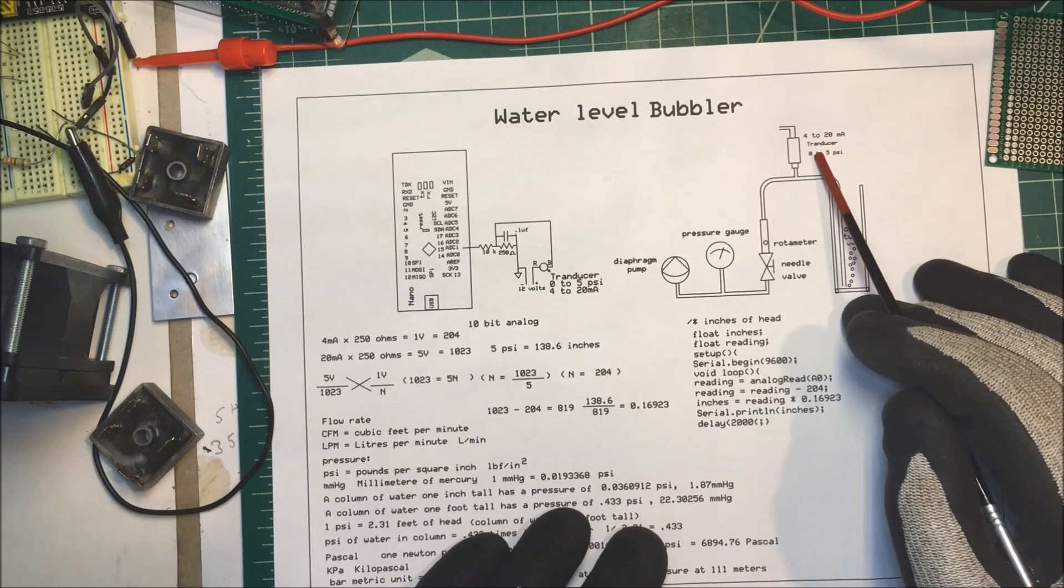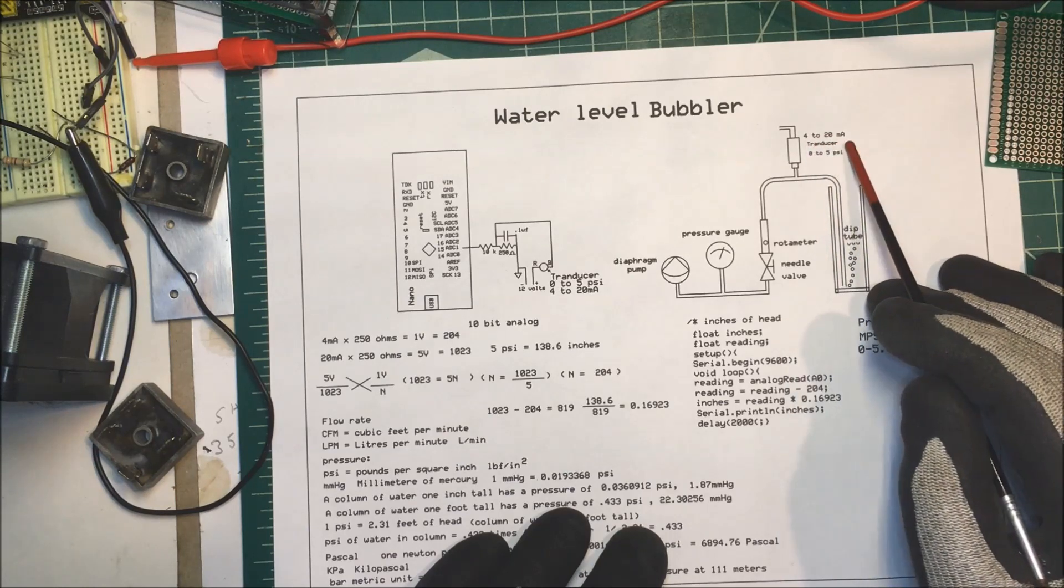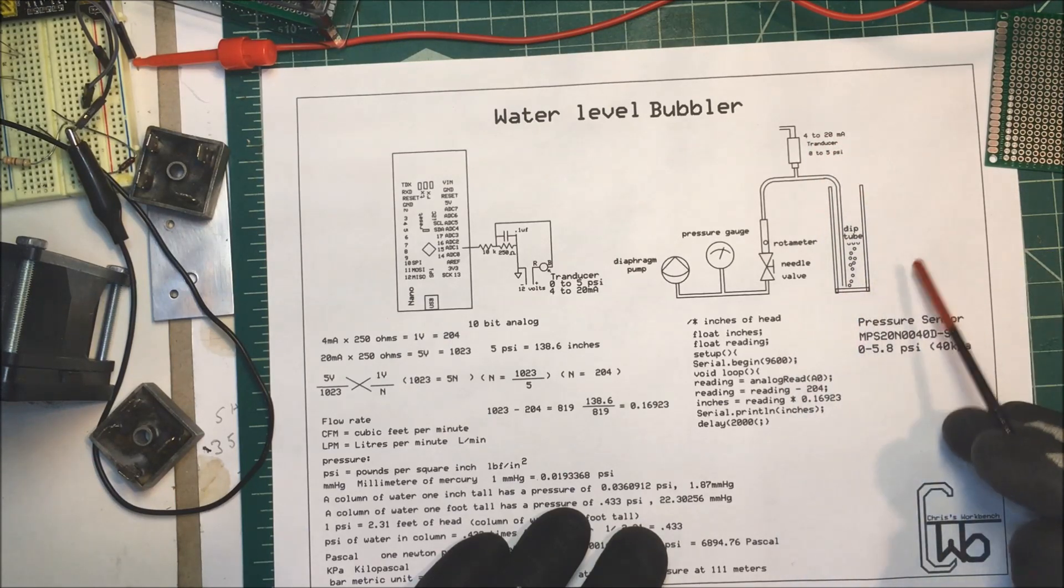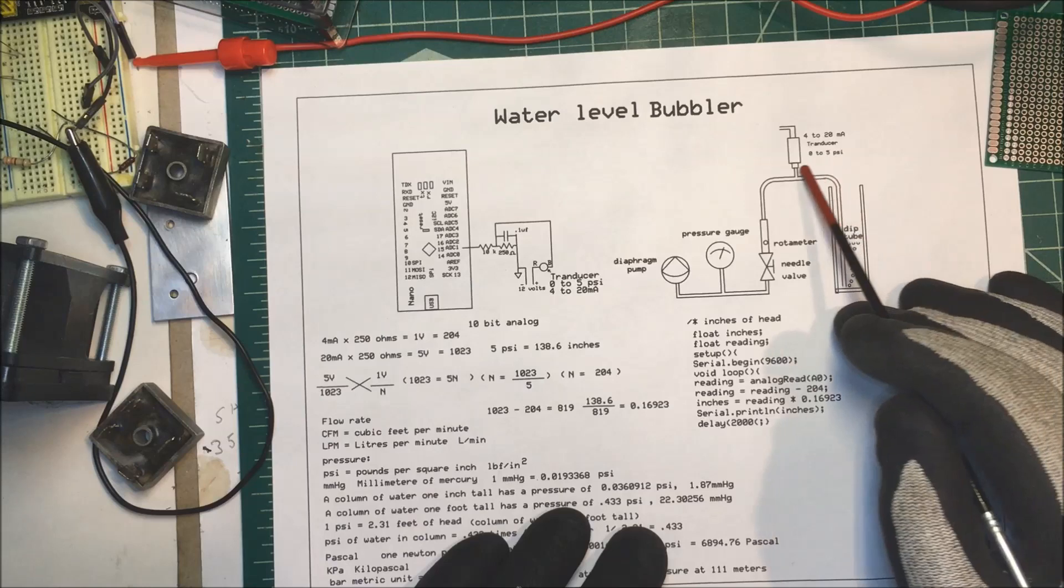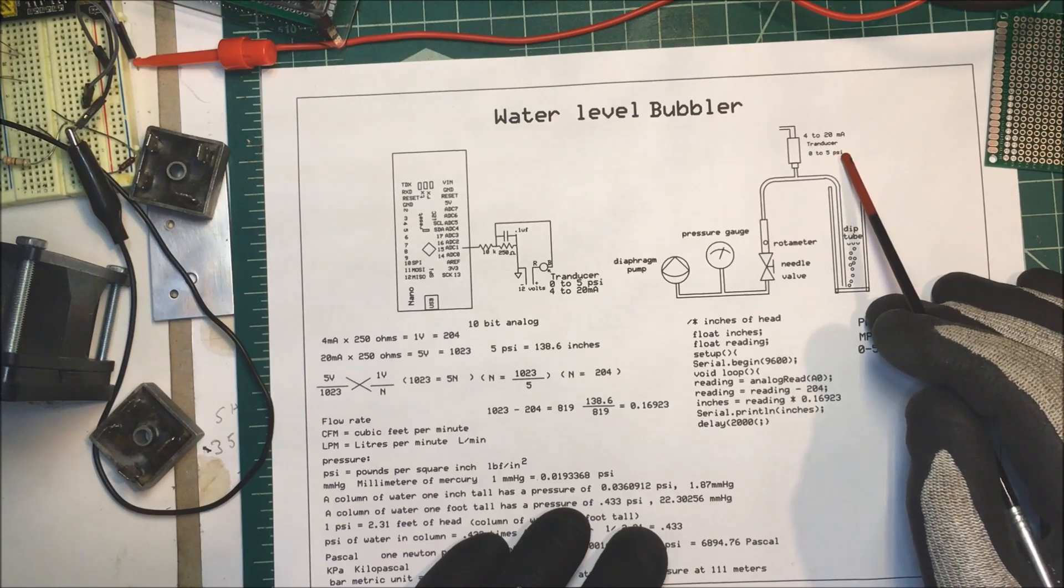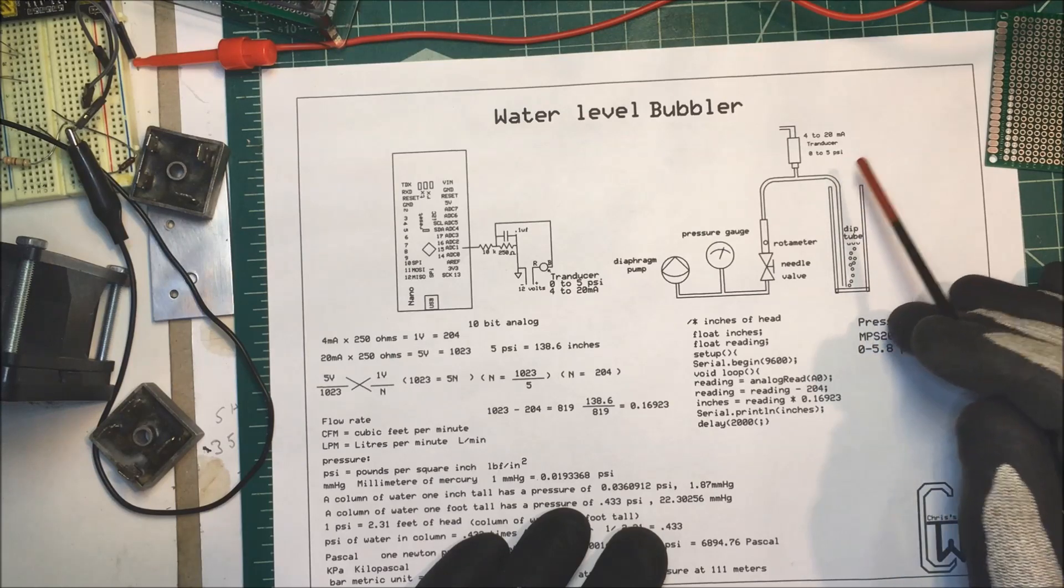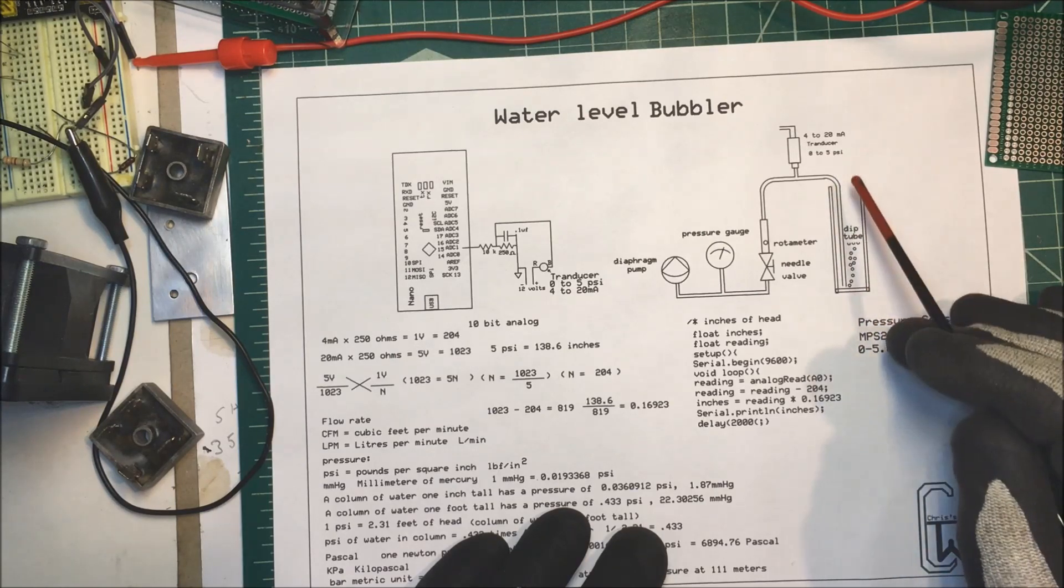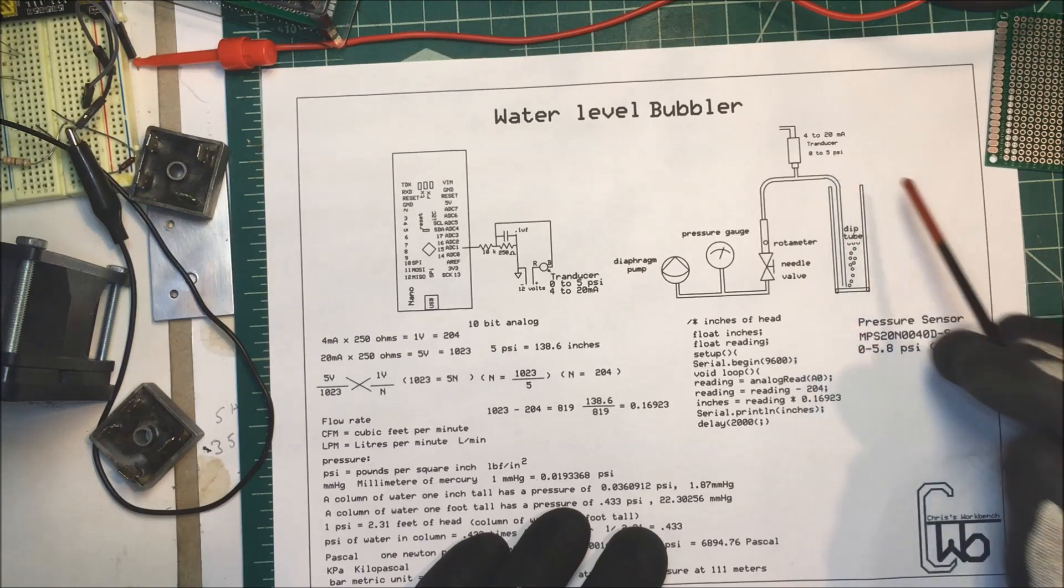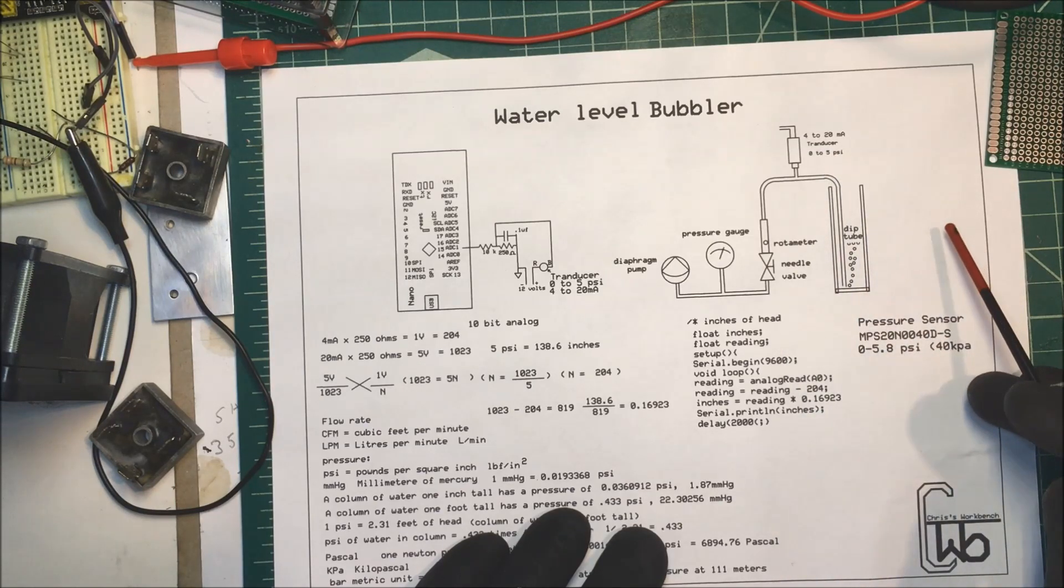And then we have a transducer. In this case, I'm using a 4 to 20 milliamp transducer, 0 to 5 psi. At 0 to 5 psi, that'll get a tank of water that's about 11 foot tall. And so if you need to, if the well's deeper than that, then you need to have a higher psi transducer.